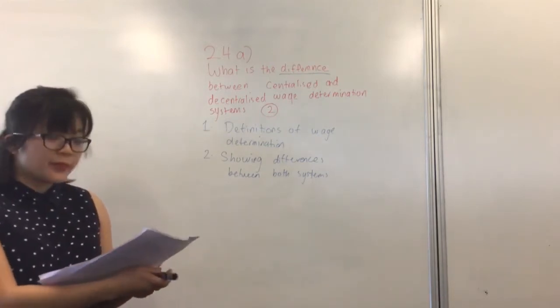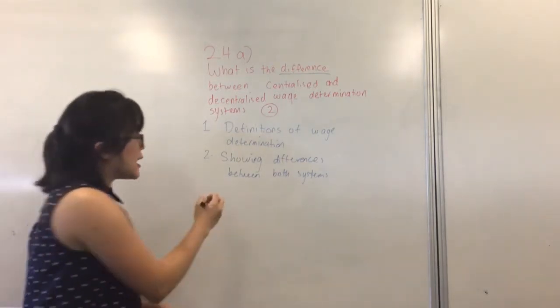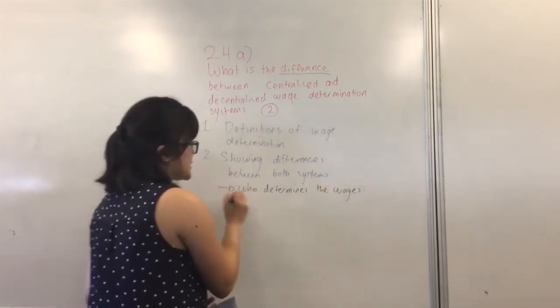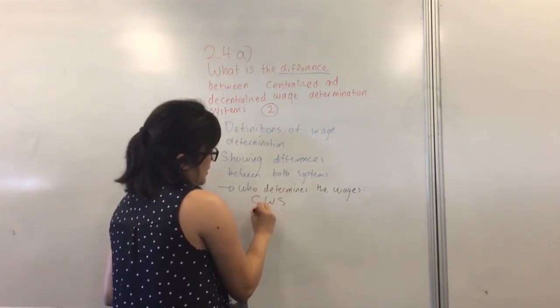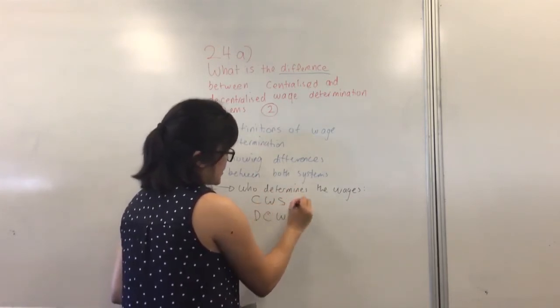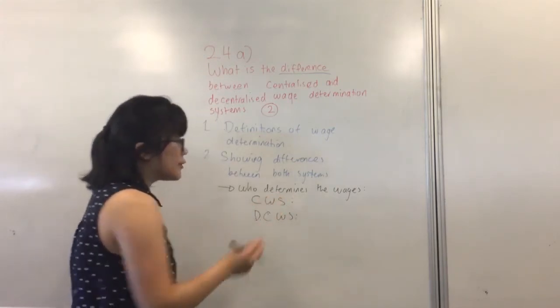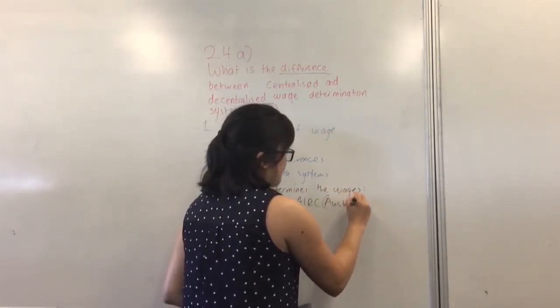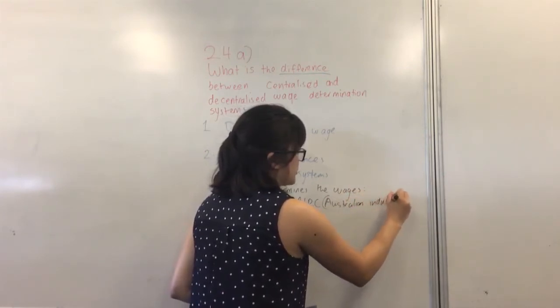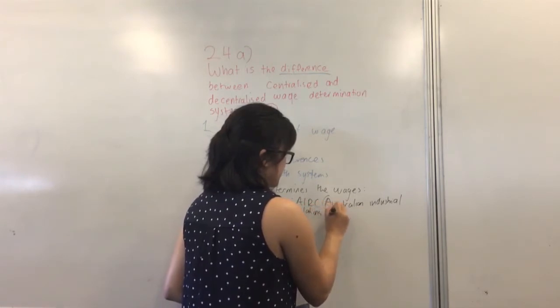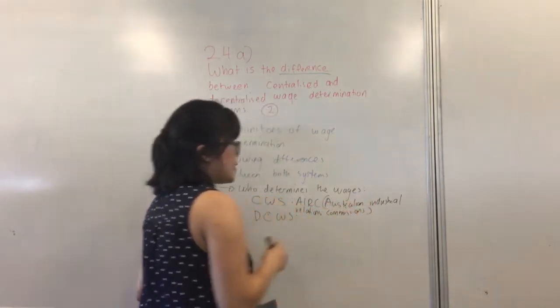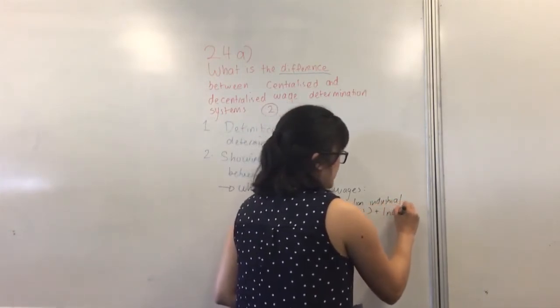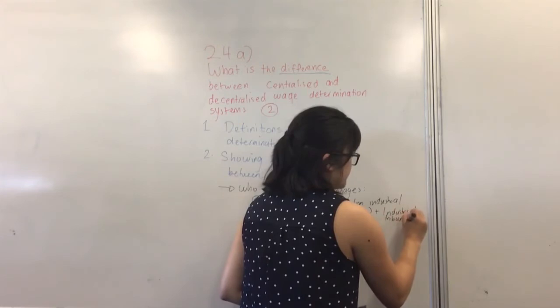A couple of differences is who determines the wages. In a centralised wage system - those are the two acronyms I'm going to put in there, so I have to write it out - centralised work system is based on the AIRC, Australian Industrial Relations Commission. So who actually does it is the AIRC and also industrial tribunals - they will actually determine the wages.